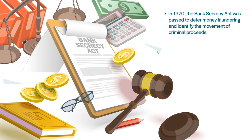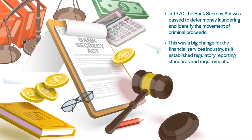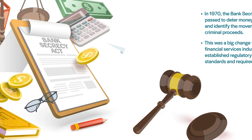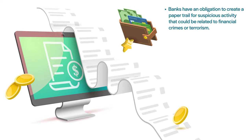It all started with the Bank Secrecy Act, which was passed in 1970 to deter money laundering and identify the movement of criminal proceeds. This was a big change for the financial services industry as it established regulatory reporting standards and requirements. With the passing of the Bank Secrecy Act, banks now have an obligation to create a paper trail for suspicious activity that could be related to financial crimes or terrorism.